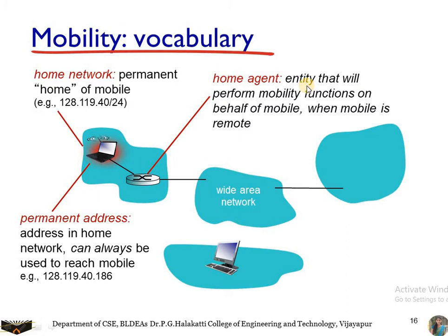The home agent is an entity in the home network that performs mobility functions on behalf of the mobile while it is away. It keeps track of where the mobile device is moving within its network and stores all related information. As a real-world analogy: the home network is like your permanent residence, the permanent address is your home address, and the home agent is a family member who keeps track of your location.